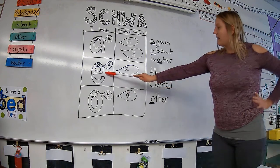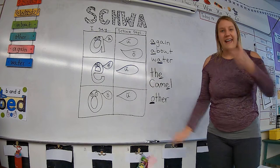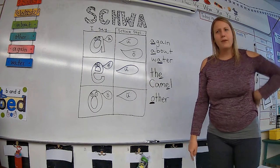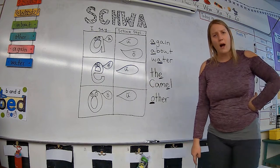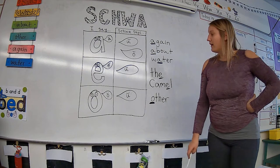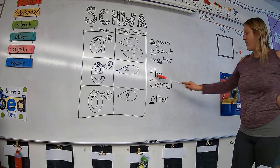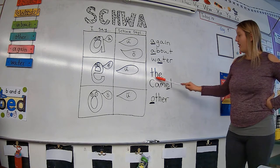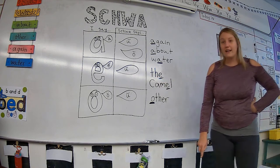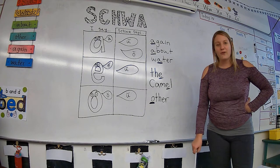Here we have our letter E that typically would say eh. But when E is feeling like a schwa and feeling lazy, it will say uh. Like in the word the. We have the uh. The E is a schwa in the word the.